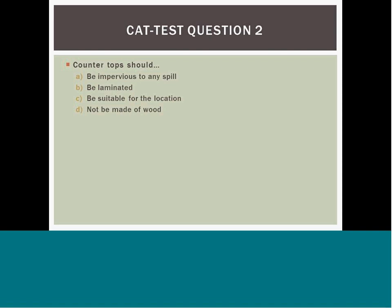Question 2: A countertop material should A) be impervious to any spill, B) be laminated, C) be suitable for the location, or D) not be made of wood. Answer C is the best answer. Locations have different needs. A is not the best answer because areas that need to be aesthetically pleasing may not need to be impervious, and that quality oftentimes limits the types of finishes available. B is not appropriate for areas of high moisture or areas where spills will occur. D is not correct because wood can be used in decorative countertop applications.